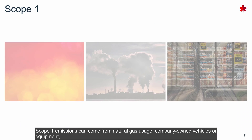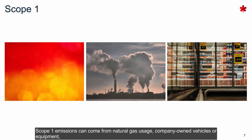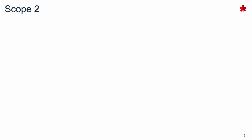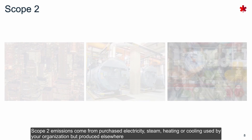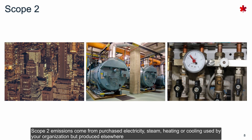Scope 1 emissions can come from natural gas usage, company-owned vehicles or equipment such as company trucks or forklifts, as well as refrigerants such as air conditioning systems or kitchen fridges.